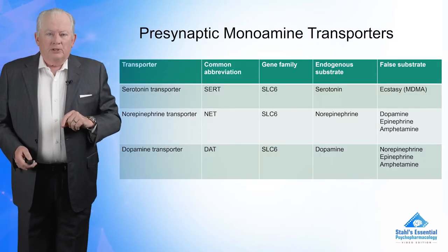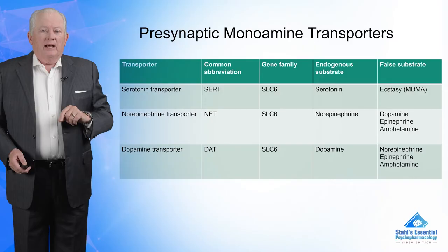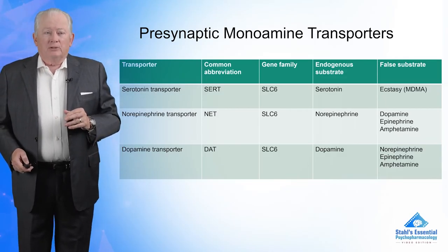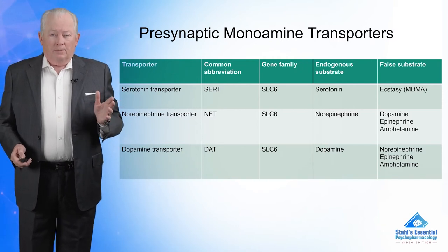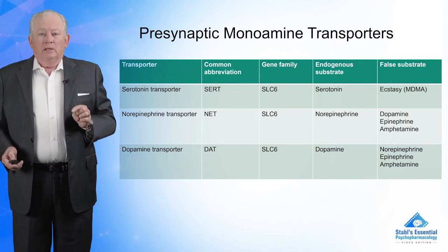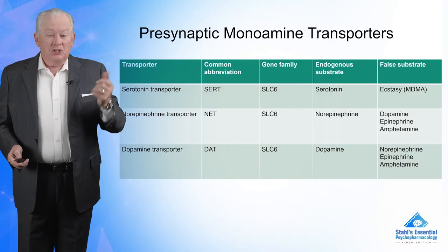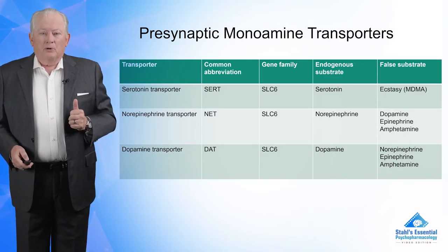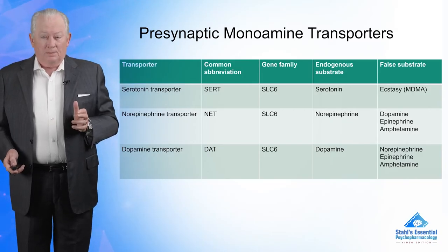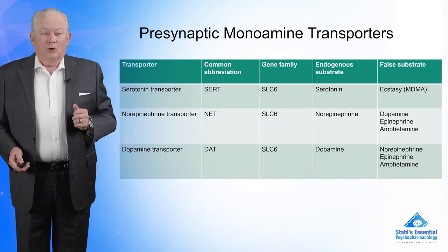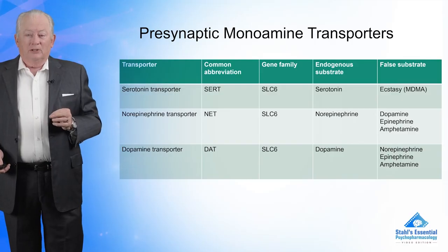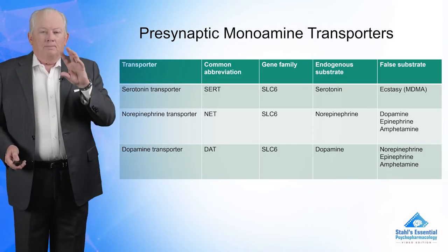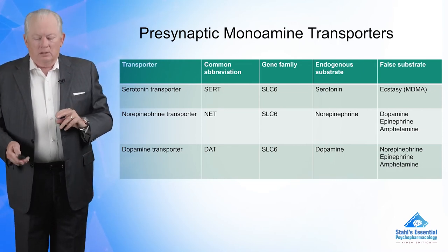The presynaptic monoamine transporters use the same molecular mechanism. Inside the serotonin neuron, serotonin is its regular substrate — but did you know that ecstasy (MDMA) is actually a substrate that hitchhikes on the serotonin transporter? Norepinephrine normally transports norepinephrine, but it can also transport amphetamine and dopamine. The dopamine transporter can work the other way too — norepinephrine on the dopamine transporter, and dopamine on the norepinephrine transporter. They're not completely selective, and amphetamine also uses the dopamine transporter.